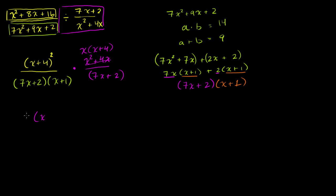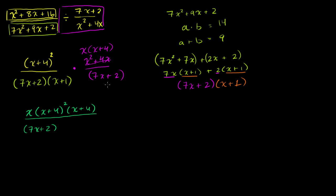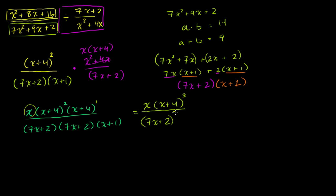Combining everything, our numerator is x plus 4 squared times x times x plus 4, which simplifies to x times x plus 4 to the third power. Our denominator is 7x plus 2 times 7x plus 2 times x plus 1, which is 7x plus 2 squared times x plus 1. And we are done.